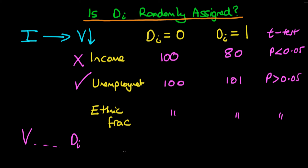We conclude that we can evaluate whether a treatment was randomly assigned by looking at the values of certain variables in the treatment group versus the control group. We know that if Di isn't randomly assigned, the simple difference of means is likely to be biased — it doesn't reflect the effect of the treatment, but rather reflects the fact that there are underlying variables which differ between the two groups. What can we do in circumstances where there are differences between the two groups in terms of these underlying variables, in terms of determining whether something is causally affecting something else? That's what I'm going to talk about in the next few videos.